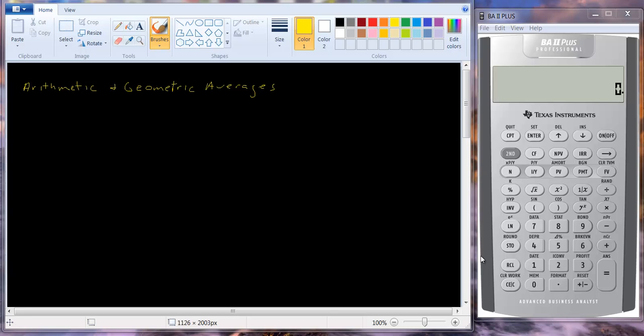So let's look at an example. Suppose you have returns of 10%, 8%, 15%, and minus 3%. If we want the arithmetic average that's the normal average we think of. You add the numbers together and you divide by the number of observations.